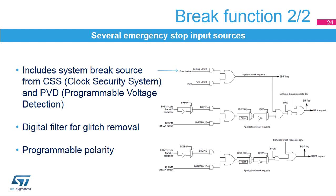The PVD indicates a dropout on the VDD supply or on the PVD-in inputs. Brake inputs can also be selected with the alternate function controller on the product pinout or from the DFSDM Sigma Delta demodulator output. External sources can be conditioned before entering the brake detection unit, enabling the selection of the proper polarity and discarding of spurious glitches by means of a digital filter.